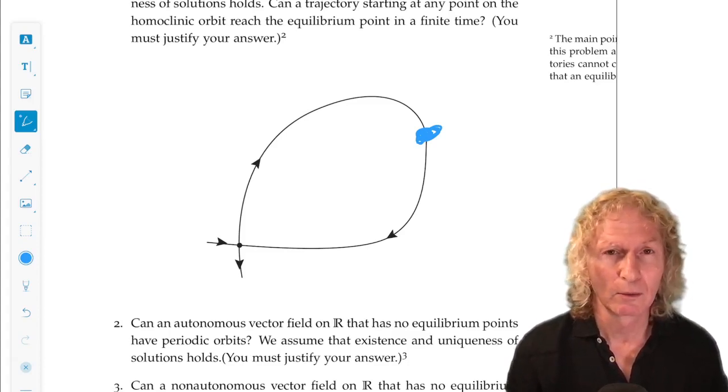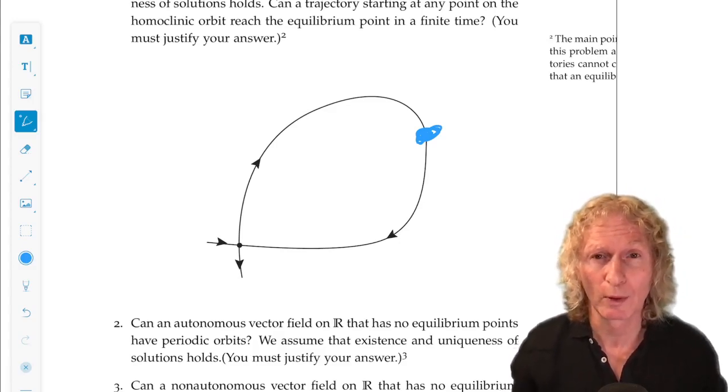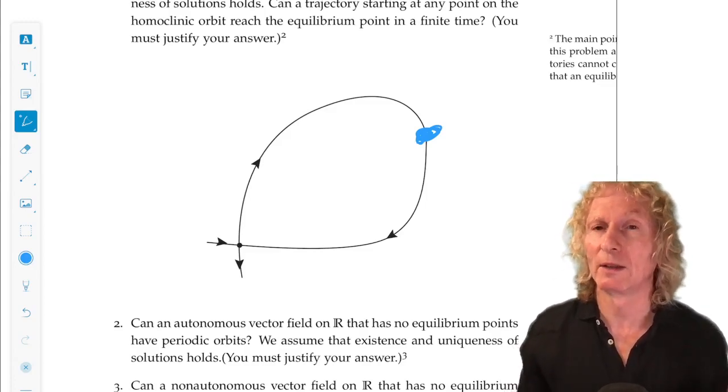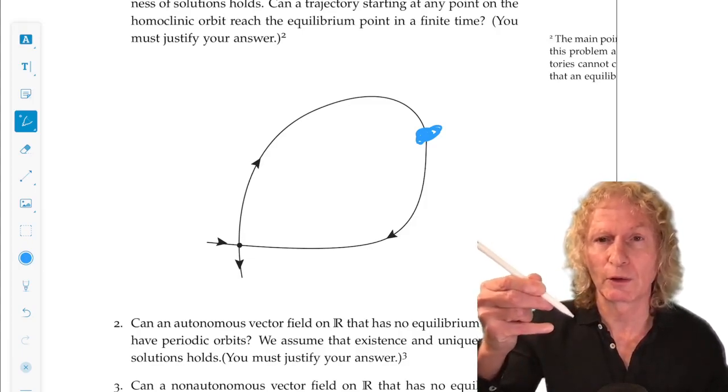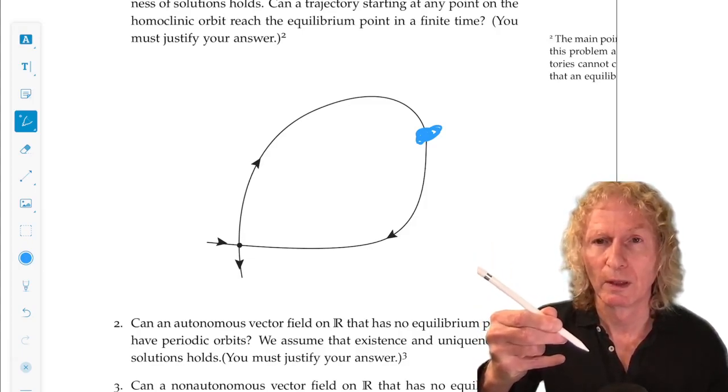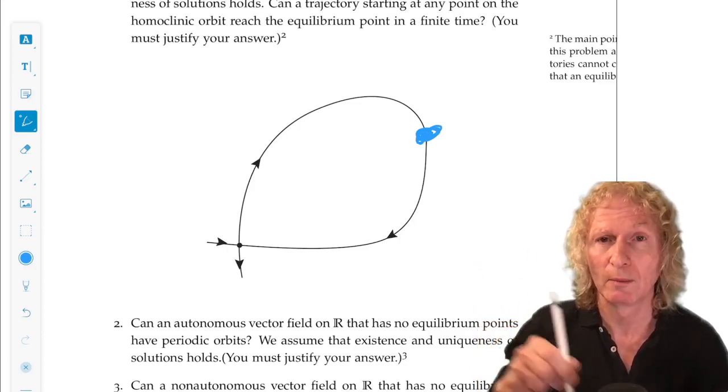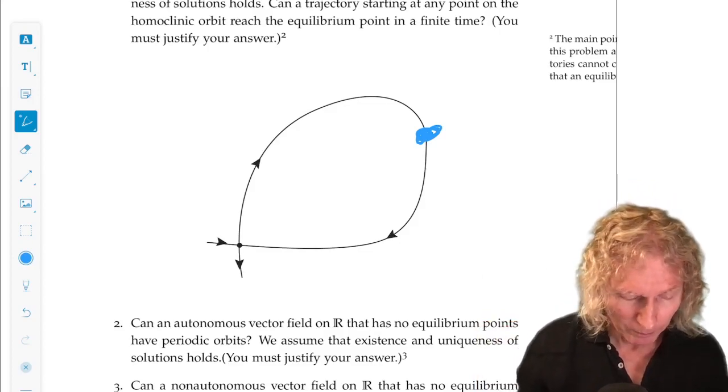But what about non-autonomous systems? Can they cross? Can they occupy the same point in phase space? Yes. That makes them complicated. But not at the same time. At different times. Because the vector field is not just in a fixed direction for autonomous systems at a fixed point. It's moving around in time. Big difference in behavior.